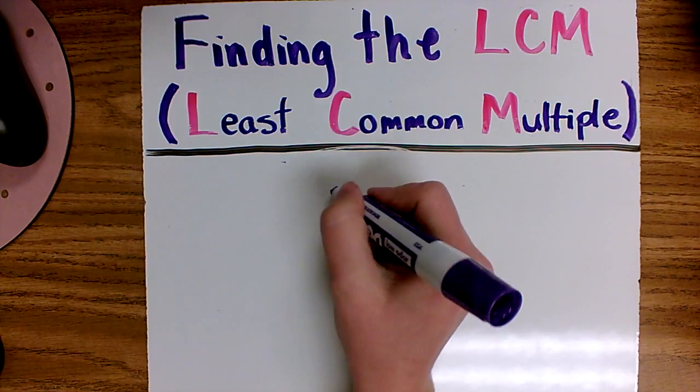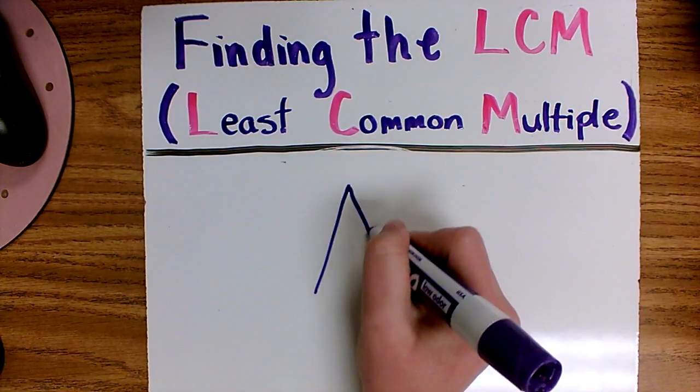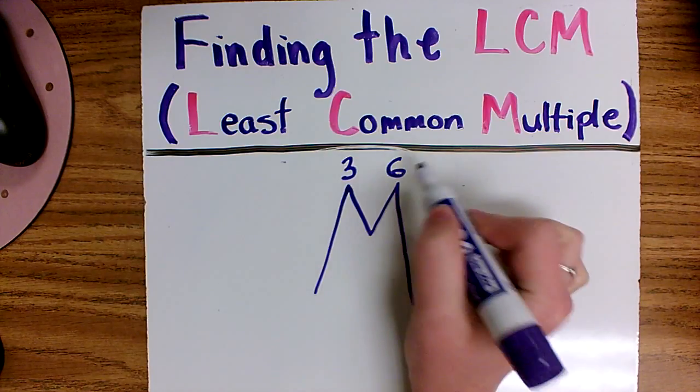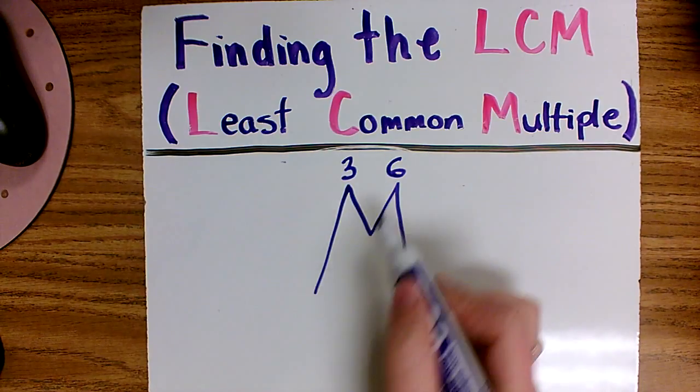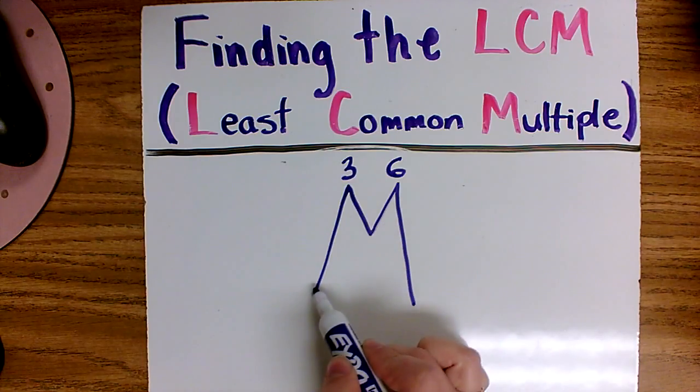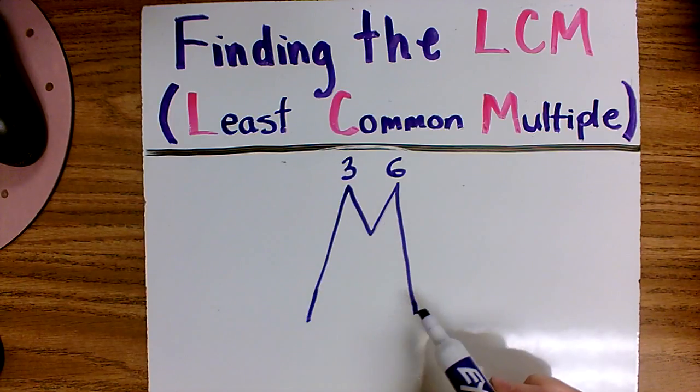We start by drawing out our multiple mountain or our giant M and writing our 3 and 6 at the top. Then we work our way down the mountain by skip counting on both sides. I do this about five times first and we can add more numbers if we need to later.